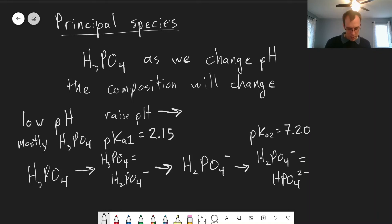So at pH equals pKa equals 7.20, that's where these concentrations are equal to each other.